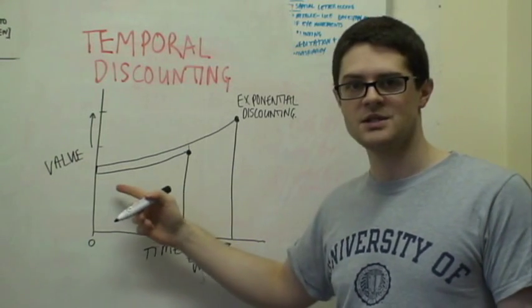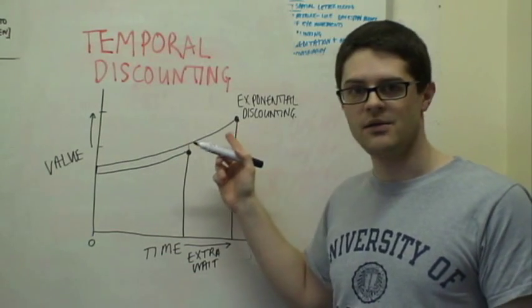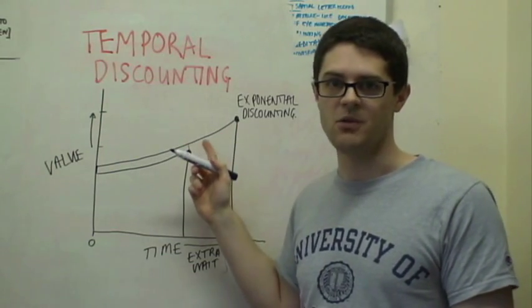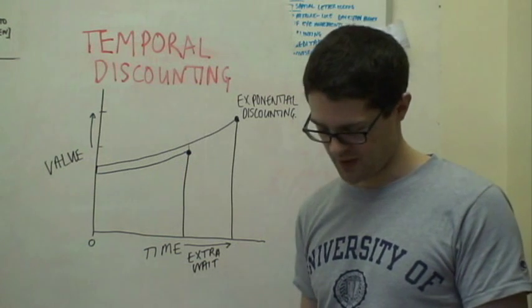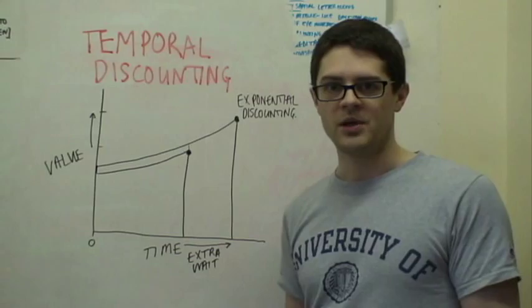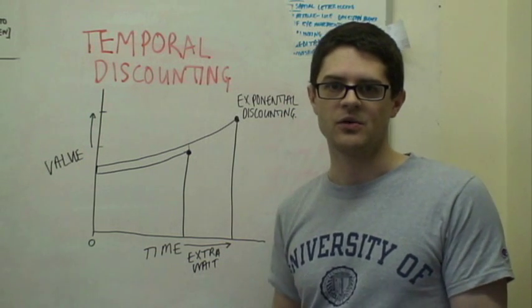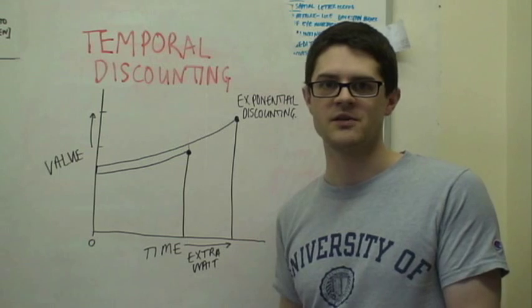So as time goes by, your preference stays the same. You will always take the bigger but delayed reward. And that's important. The reason why it's important is because it's not what people do. So it's yet another example of how people don't conform to normative models.